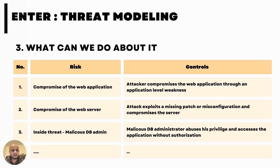So this is where, now that we have a decent list of risks — we're talking about compromising the web application, maybe an attacker can compromise it through some vulnerability, maybe there's a compromise of the web server, somebody exploits a patch, or an insider threat based on a malicious database admin. So you have a decent size list of threats. And what you'll do is ideally go through each of them and address each threat. You can mitigate it like we talked about in risk management — mitigated, eliminated, transferred, or accepted.